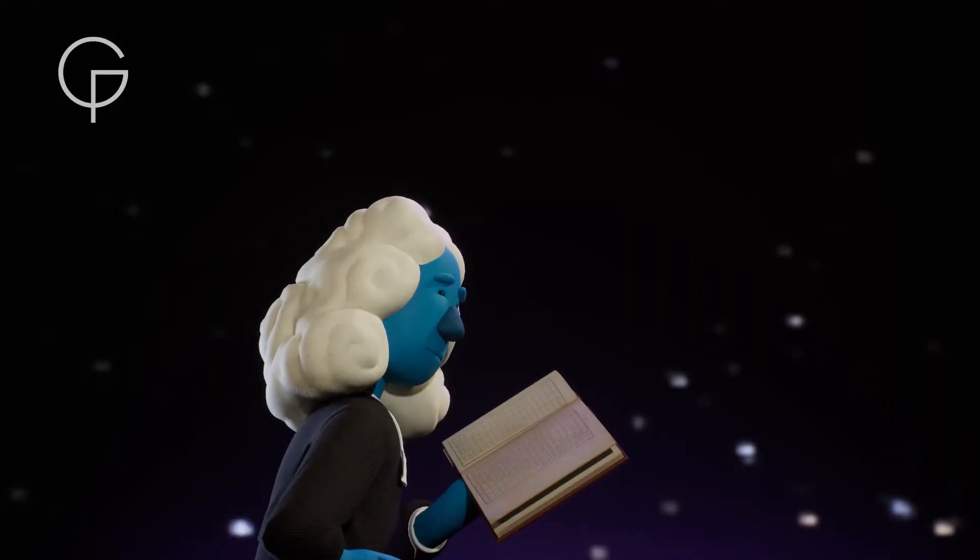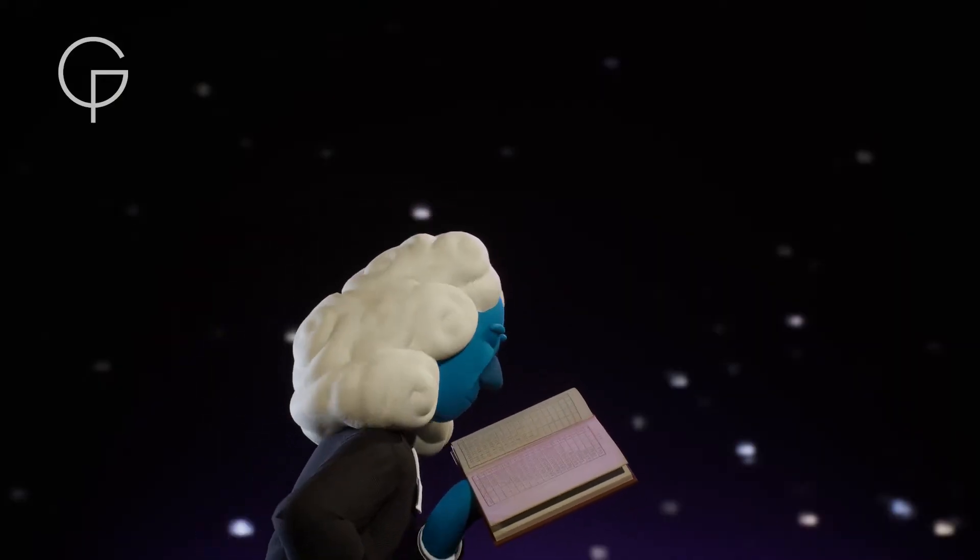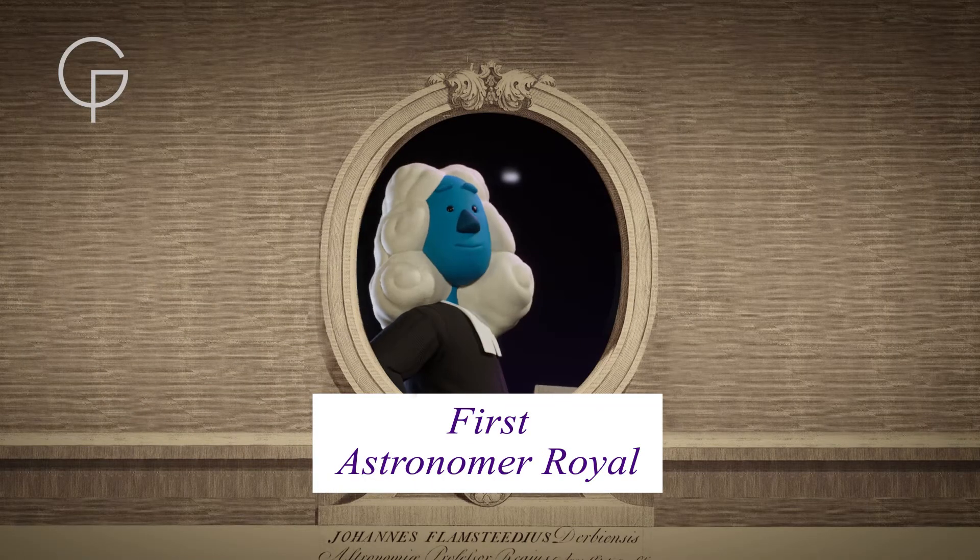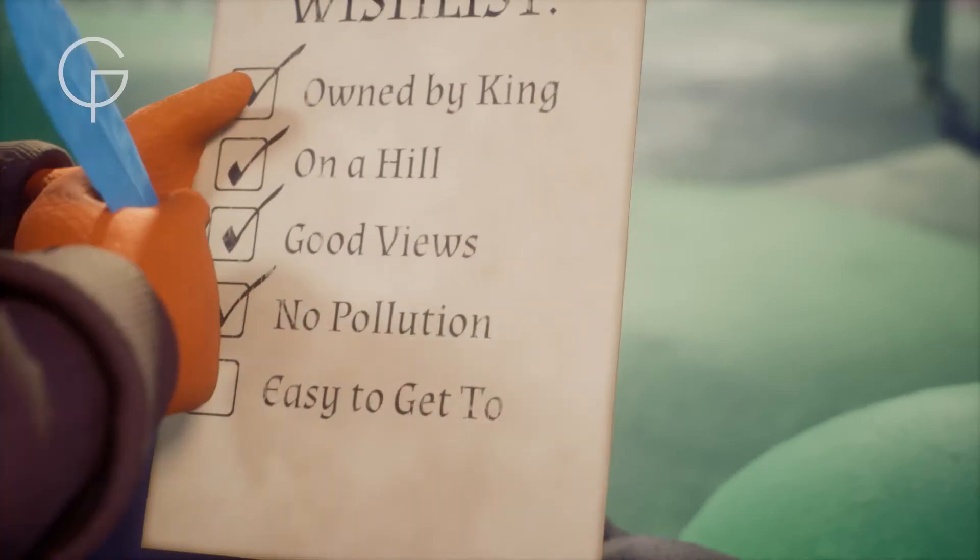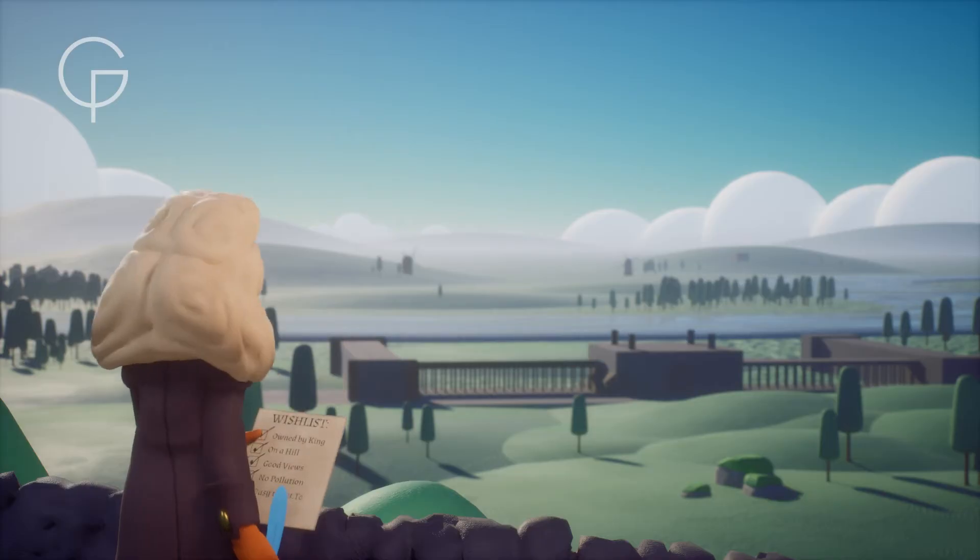John Flamsteed knew that an accurate map of the stars was needed, and so he was hired as the first astronomer royal. The site of the old Greenwich Castle was the ideal location for the new observatory.